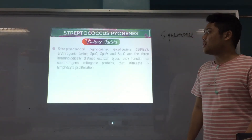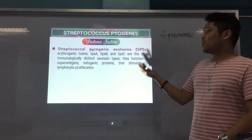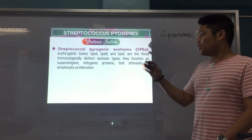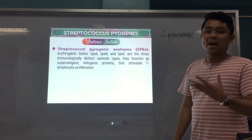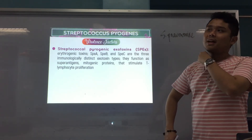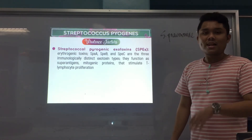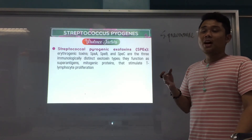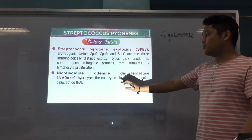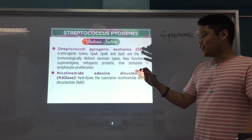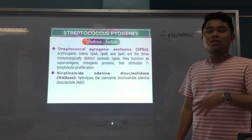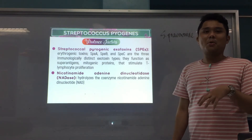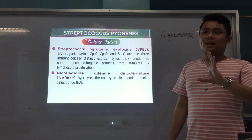Streptococcal pyrogenic exotoxins (SPEs) — also called erythrogenic toxins — include SpeA, SpeB, and SpeC. They function as superantigens, as mitogenic proteins, and stimulate T-lymphocyte proliferation. These exotoxins are responsible for streptococcal toxic shock-like syndrome, as they can over-activate the immune system leading to shock. Nicotinamide adenine dinucleotidase (NADase) is an enzyme that hydrolyzes the coenzyme NAD.